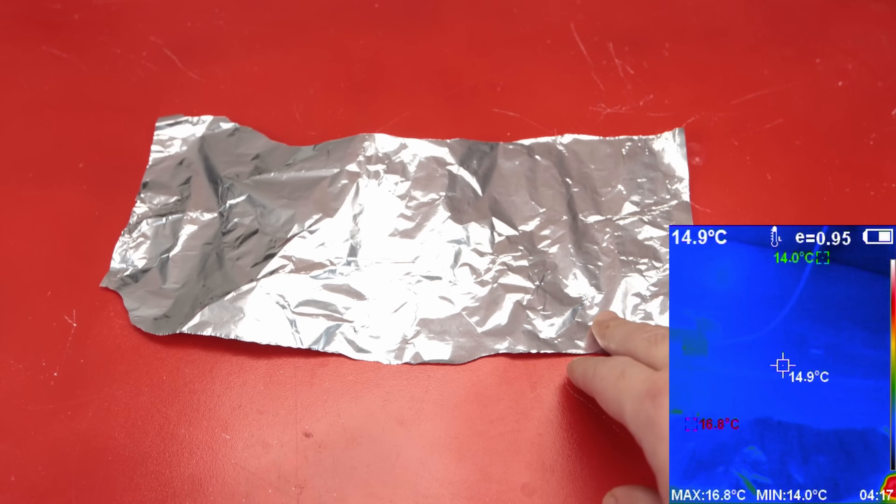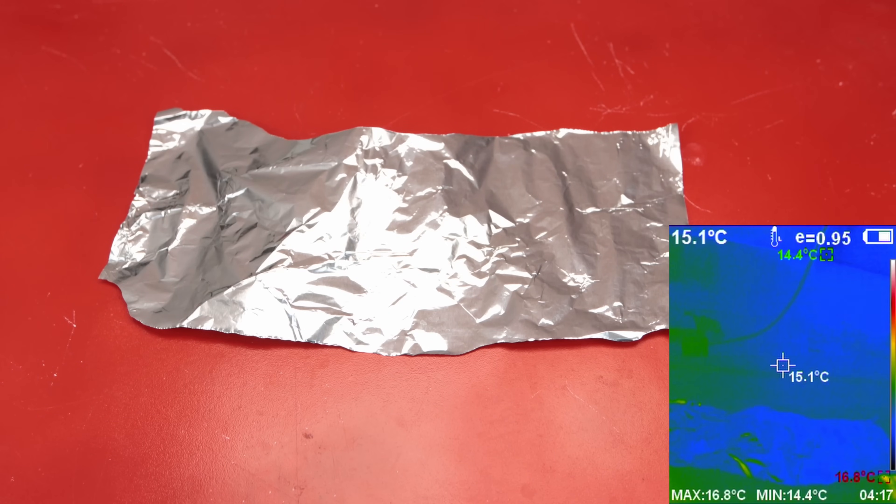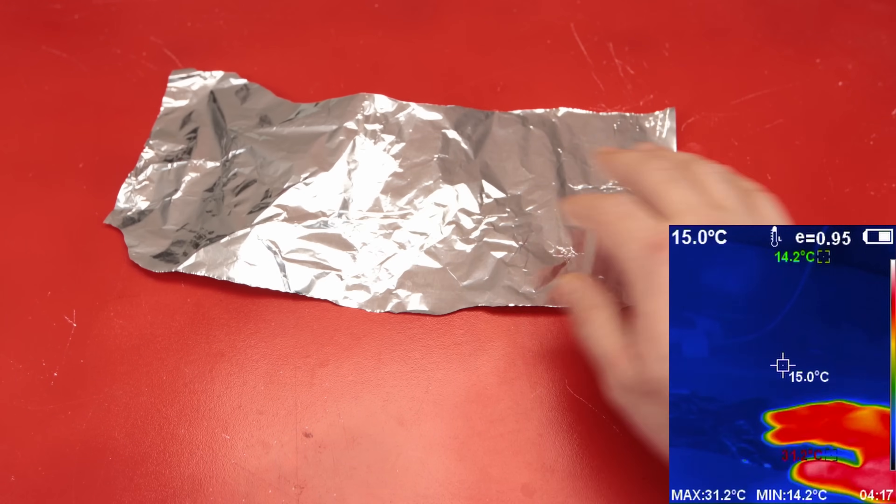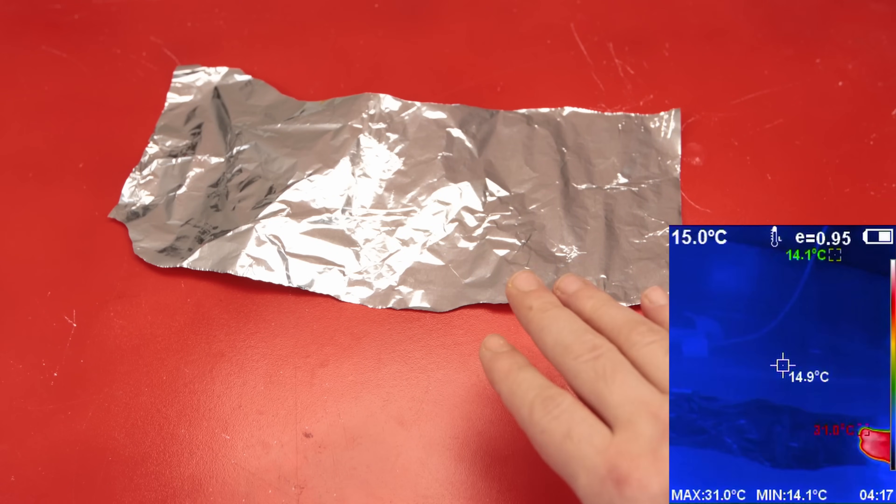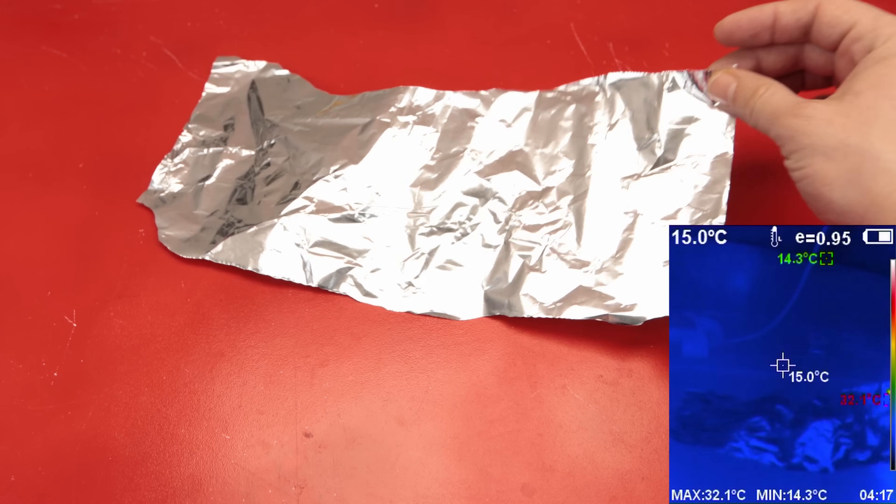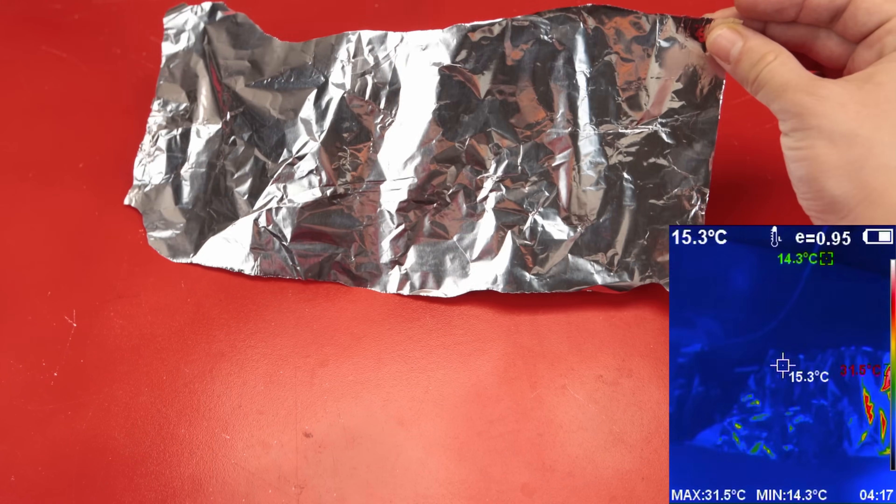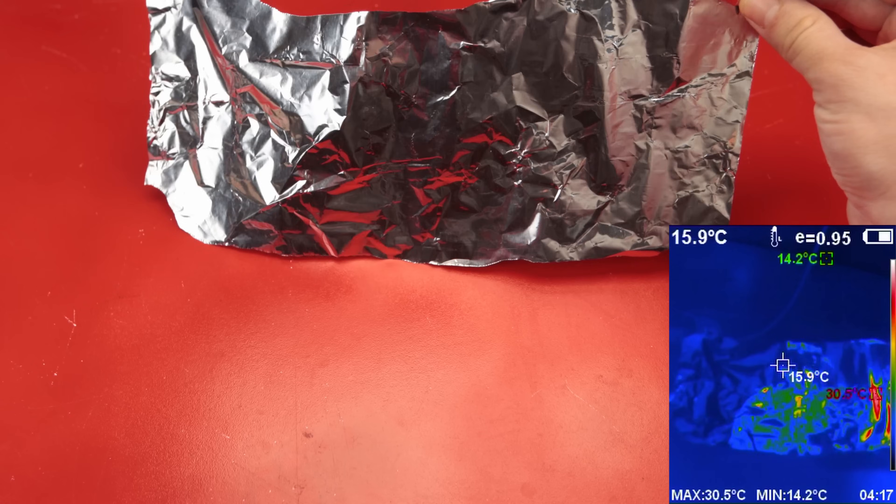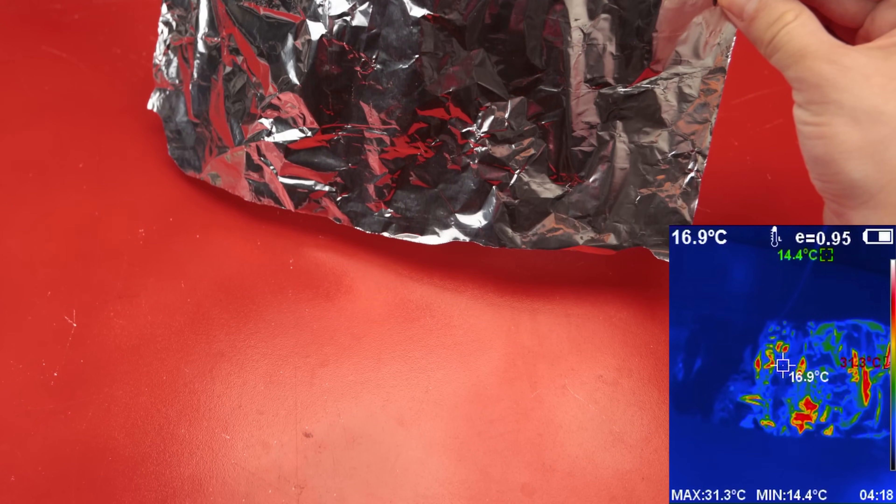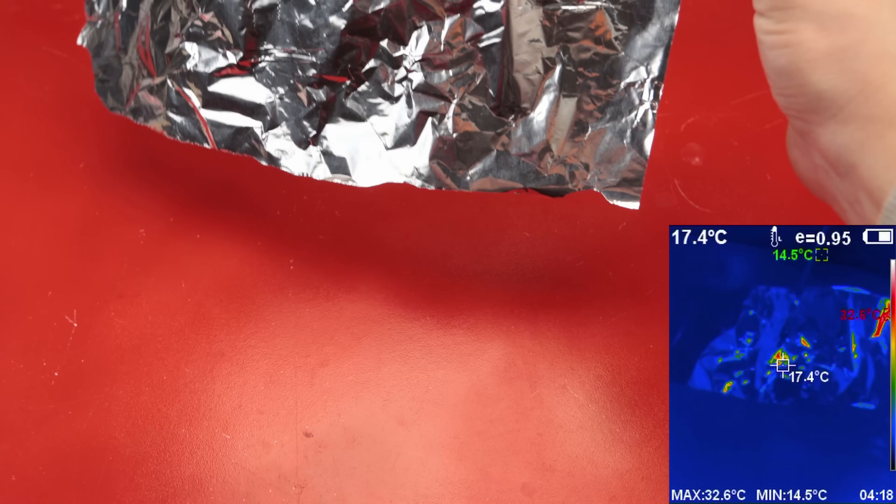Before diving into practical applications, I want to mention two important things about thermal cameras - and this applies even to high-end models. Both are easier to demonstrate using aluminum foil. The first thing is related to emissivity, which is basically how effective a material surface is at emitting energy as thermal radiation. It varies for different materials and while you can adjust it in the settings, you need to be aware of it otherwise you might misinterpret the readings.